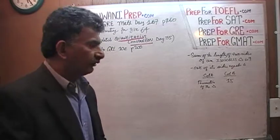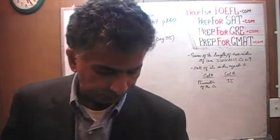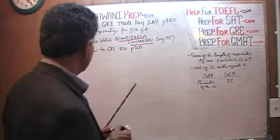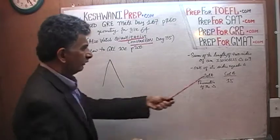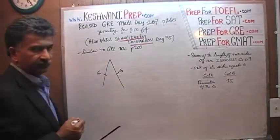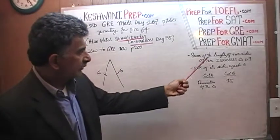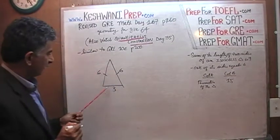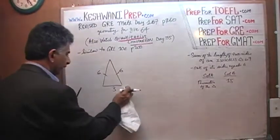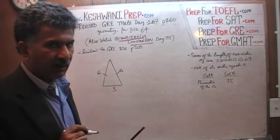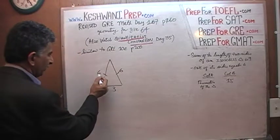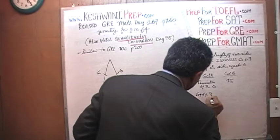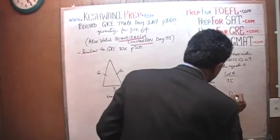An isosceles triangle means two of its sides must be equal. We know two sides add up to 9 and one side equals 6. One possibility is that the side equal to 6 is one of the two equal sides, meaning both equal sides are 6. Since the sum of two sides must be 9, the third side would be 3 — because 6 plus 3 equals 9. If this were the case, the perimeter would be 6 plus 6 plus 3, which equals 15 — the same as Column B. So the answer would be C.